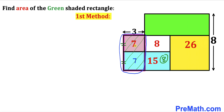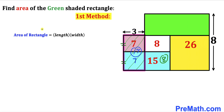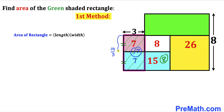Now let's focus on this shaded rectangle. Its combined area is 7 plus 7, giving us 14. We know that this side length of the shaded rectangle is 3. Using the area formula: 14 equals 3 times width, so width equals 14 divided by 3. That means this side length is 14 over 3, and consequently this opposite side length is also 14 over 3.